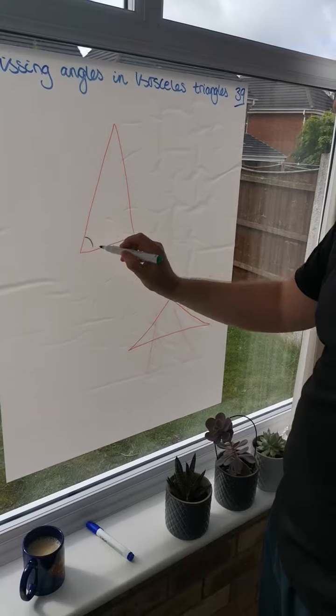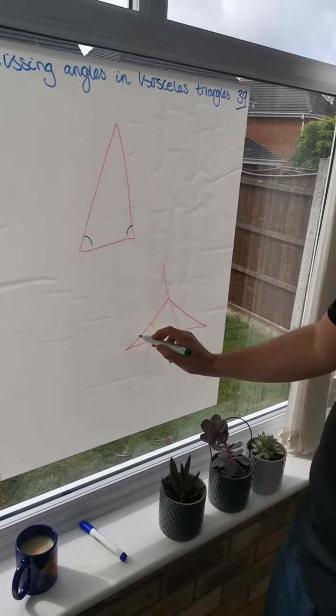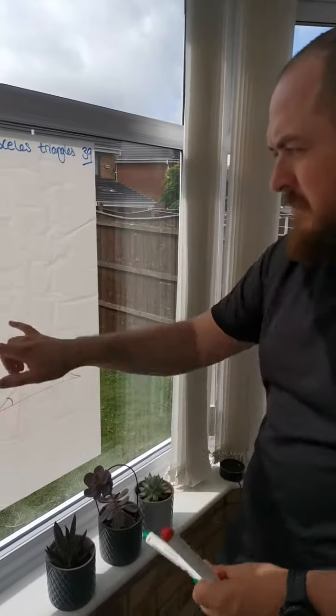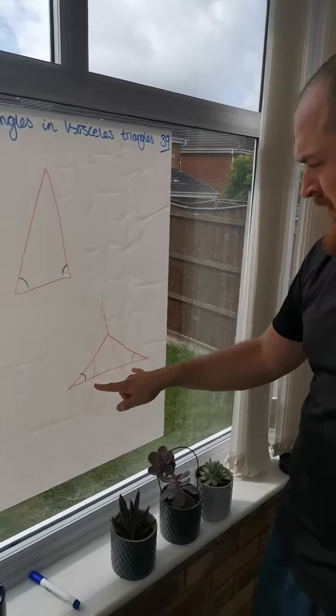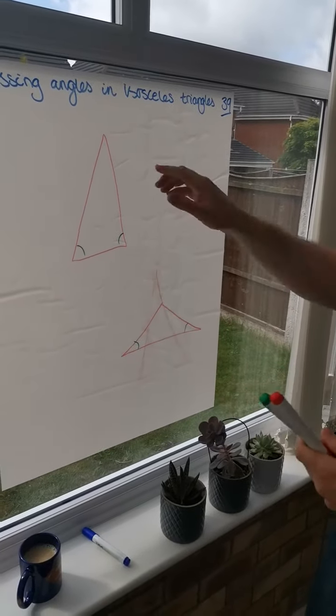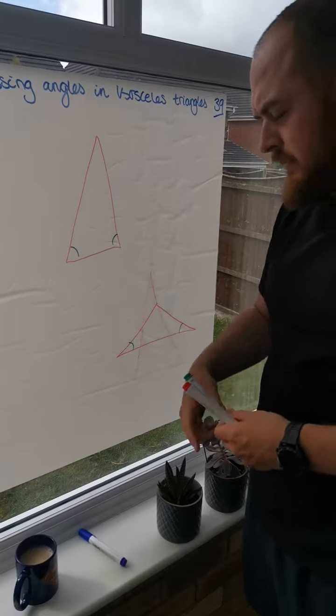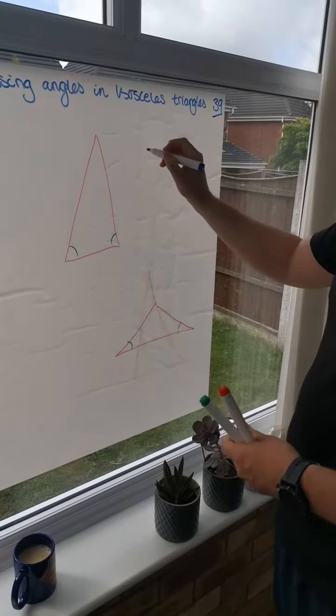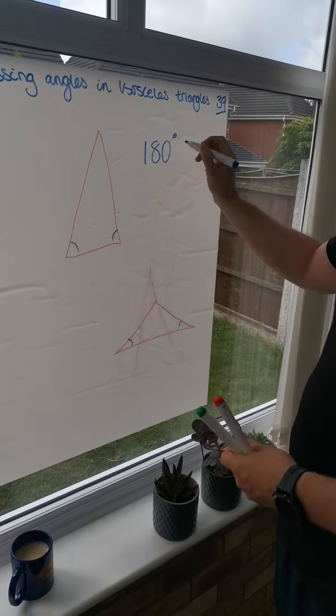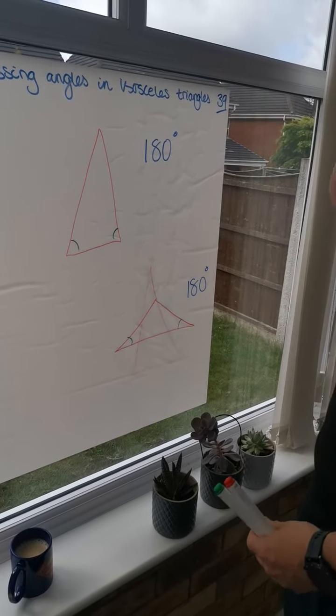And two equal angles, which, nine times out of ten, are going to be the bottom two. The bottom two angles. Like in every triangle, all angles add up to 180 degrees.